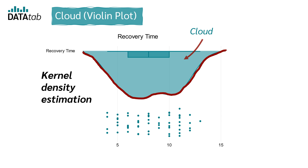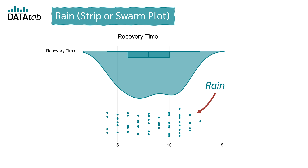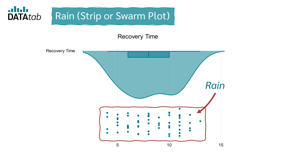It provides insights into the shape of the data distribution, highlighting areas of higher density. The second component is the rain — a strip or swarm plot consisting of individual data points or raw data, represented as dots. This part of the plot shows each data point, giving a clear view of the raw data.